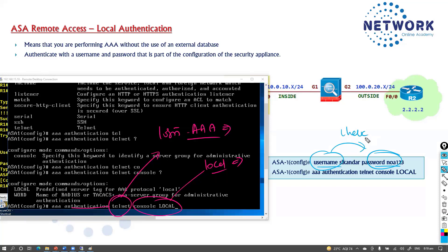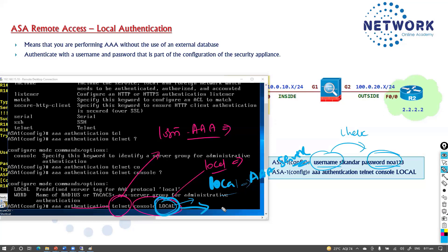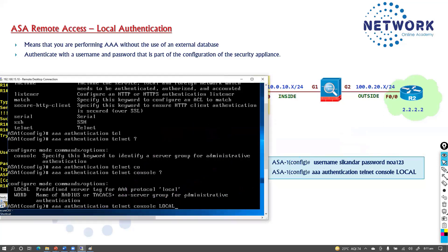It will check the local database for the username and password we created. Make sure to use capital 'LOCAL', not lowercase 'local'. If you use lowercase 'local', the ASA will treat it as a TACACS server name and try to reach that server. Capital 'LOCAL' means use the local authentication database. This is an important distinction — capital LOCAL tells AAA to use local authentication.